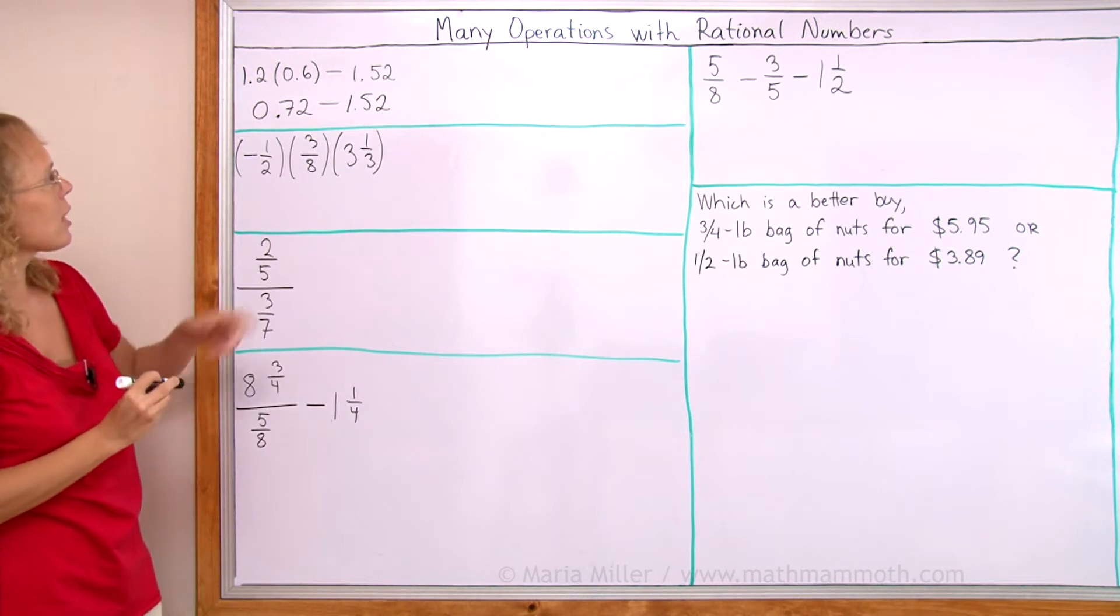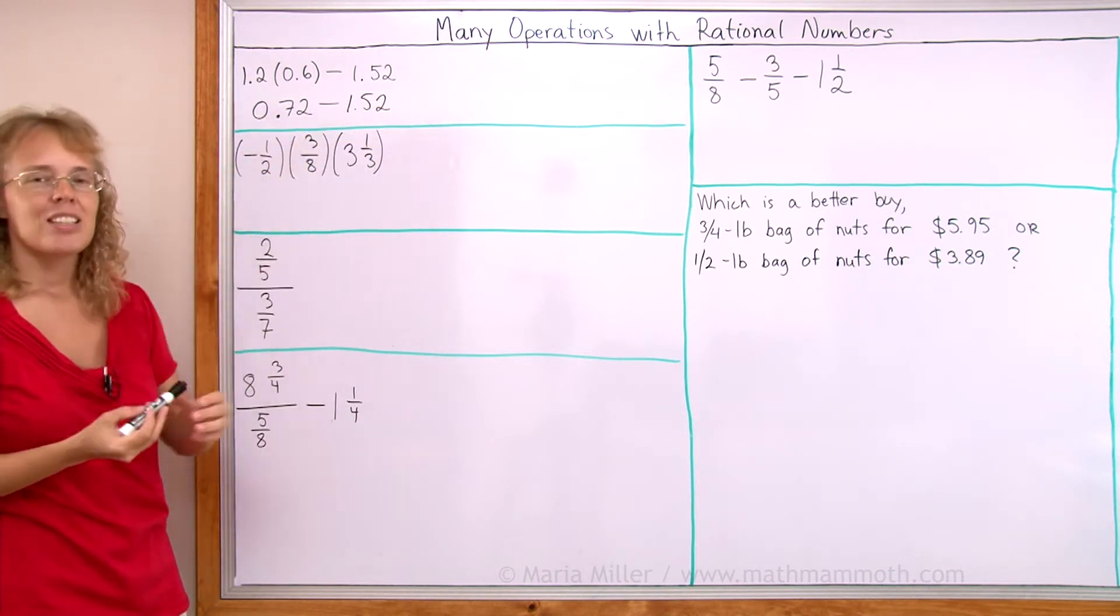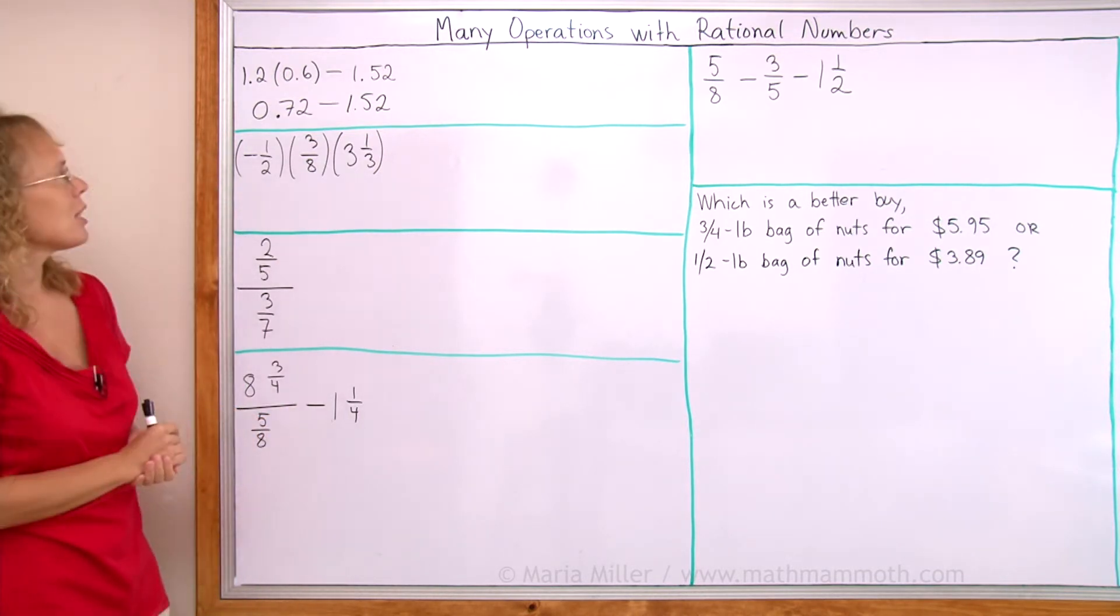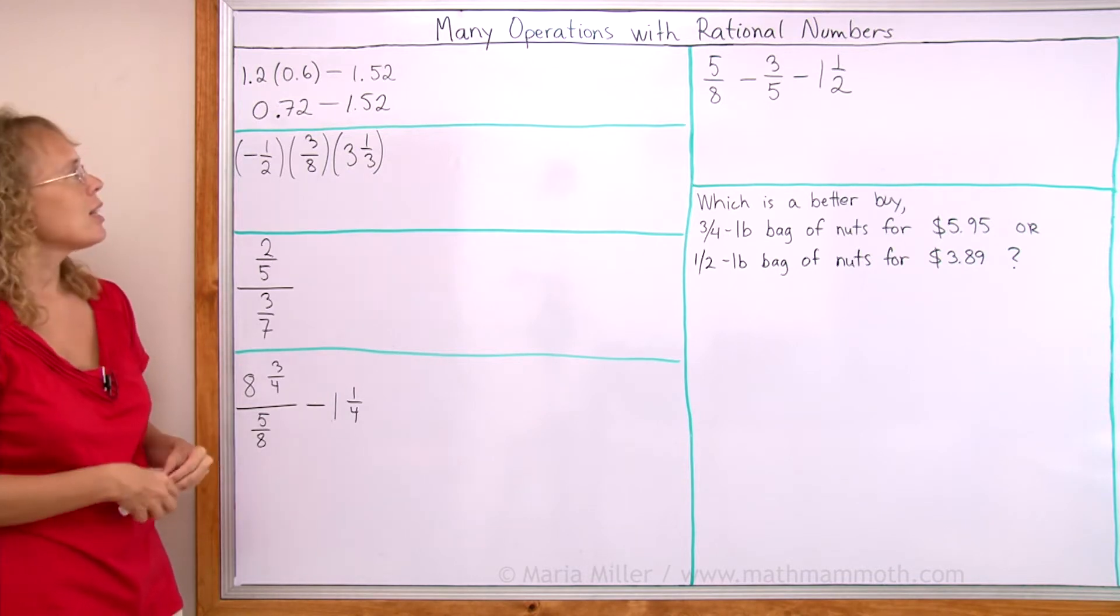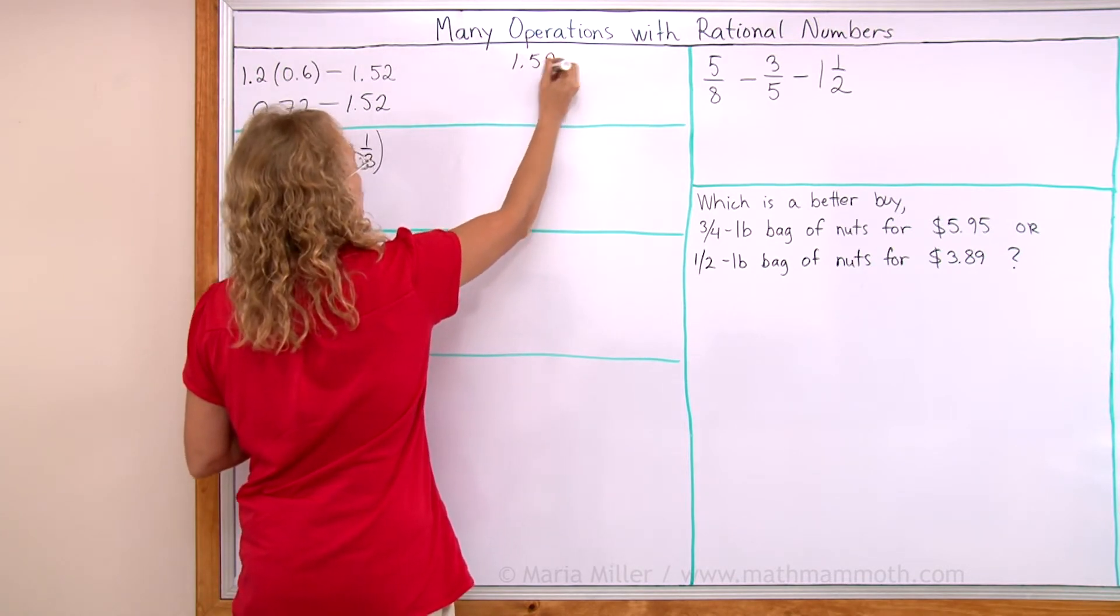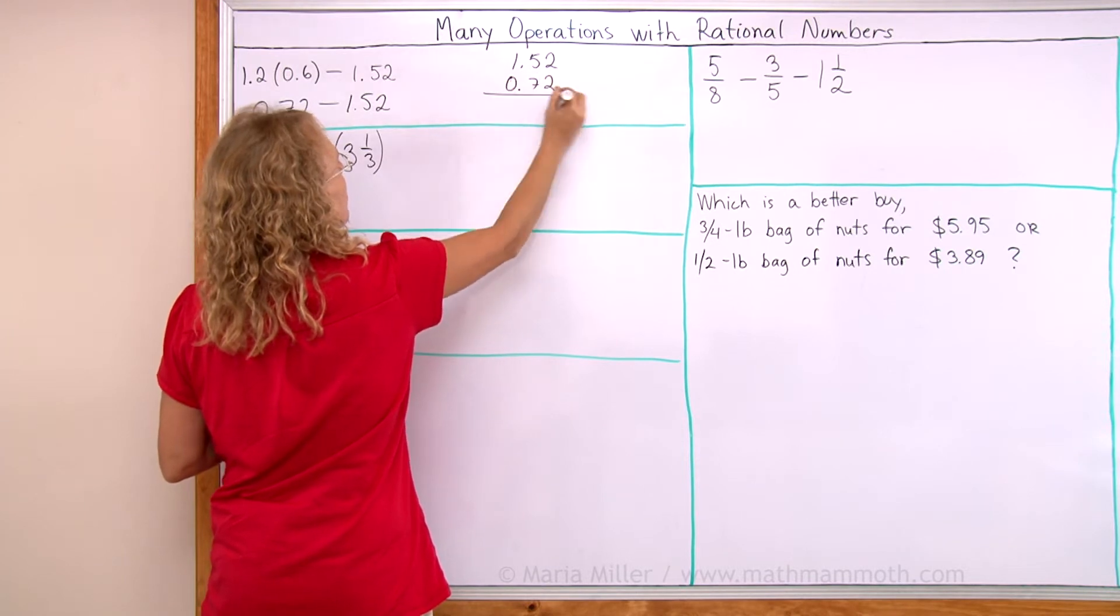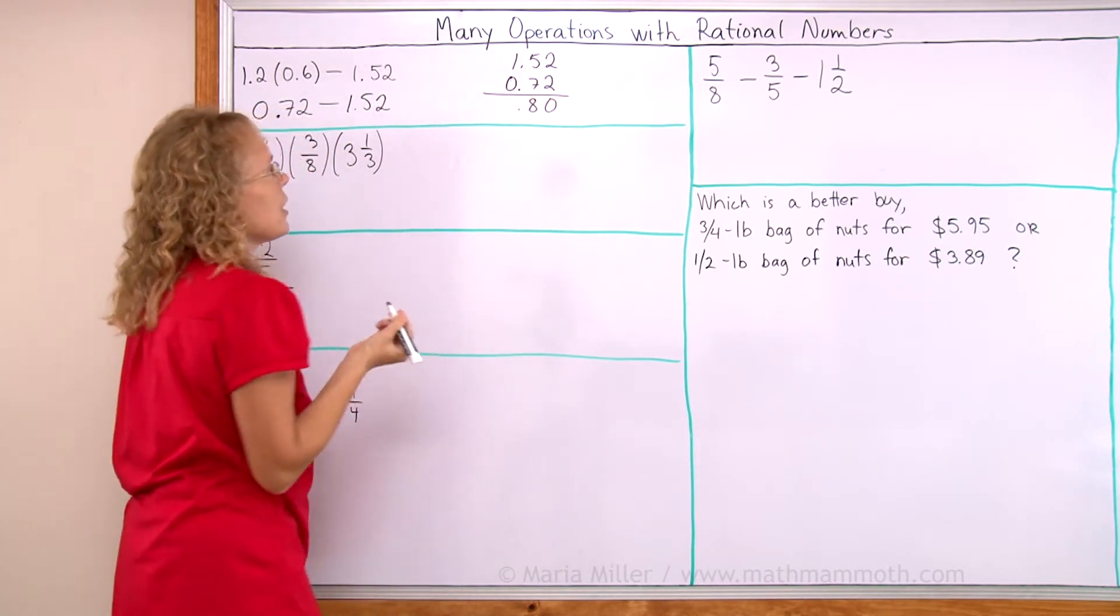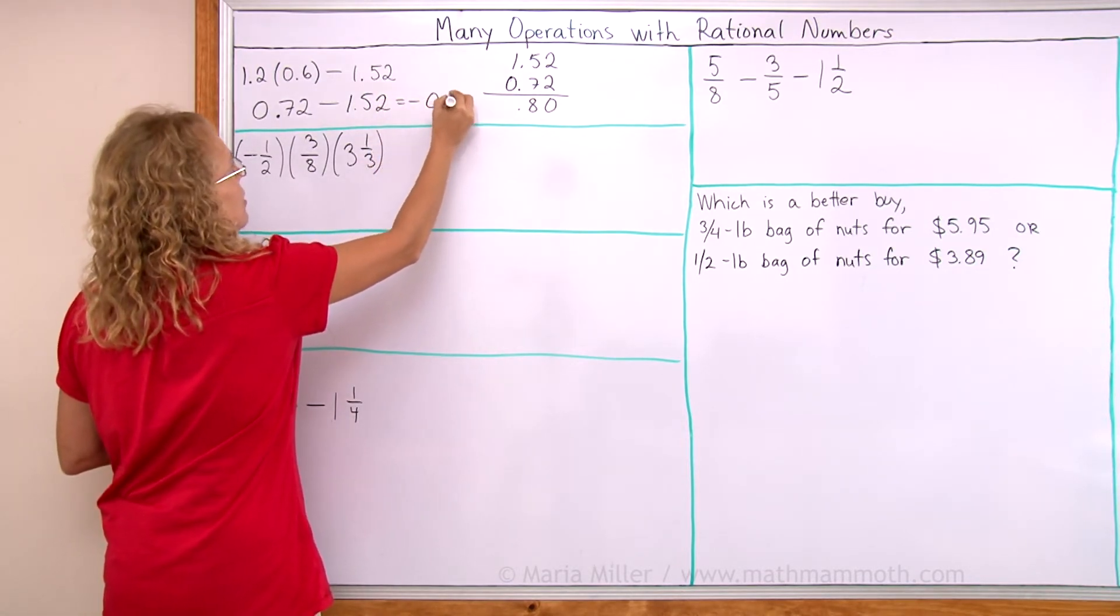And then we do the subtraction. Now notice that I'm subtracting just a smaller number minus a bigger number. So I know my answer will be a negative number. What I need to do is subtract the absolute values and then take the answer as negative. So I will actually subtract 1.52 minus 0.72. And of course, it's like 15 minus 7 equals 8. So I just get 8 tenths. But the answer is negative 8 tenths.